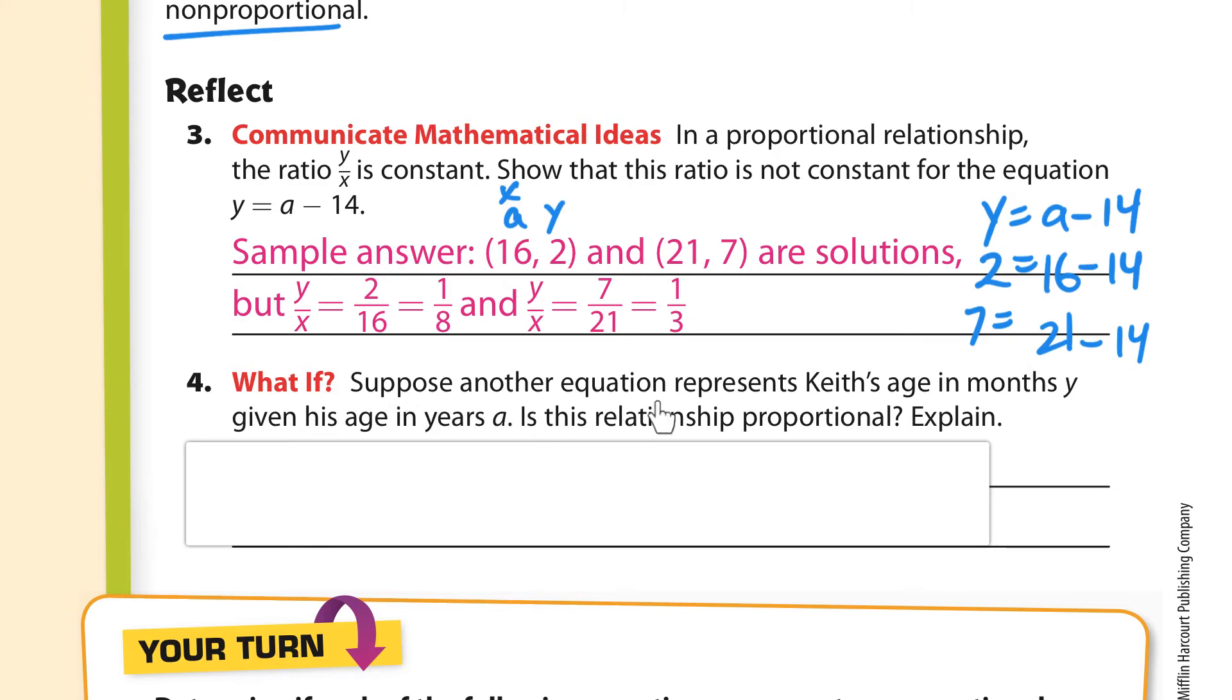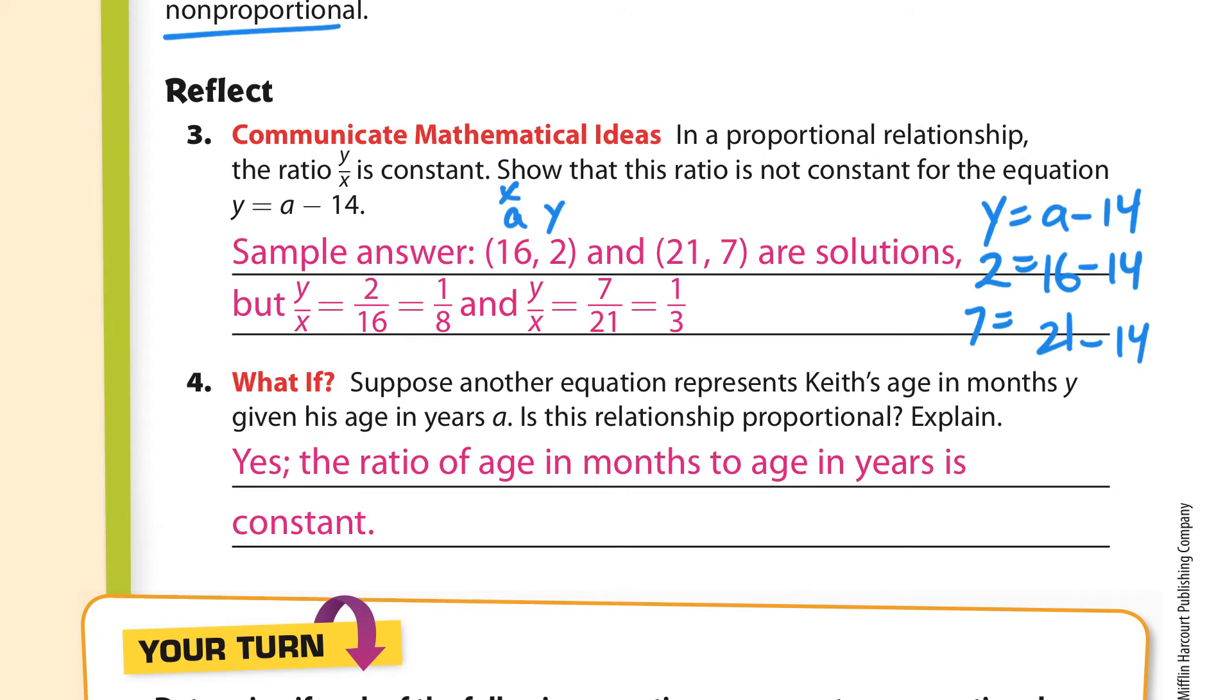Next. Suppose another equation represents Keith's age in months y given to his age in years. Is the relationship proportional? Yes, the ratio of age in months to age in years is constant. Months to years would be the y over the x. If you're 12 months, you're one year. If you are 24 months, you're two years, and so on. I can go 36 and 3. This always simplifies to 12. 24 divided by 2 is 12, and 36 divided by 3 is 12. So that is constant.